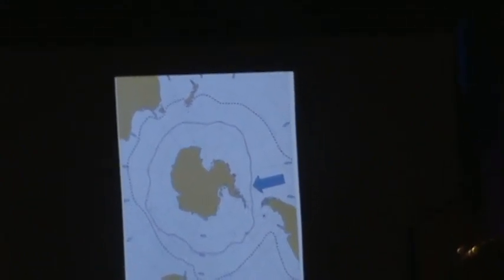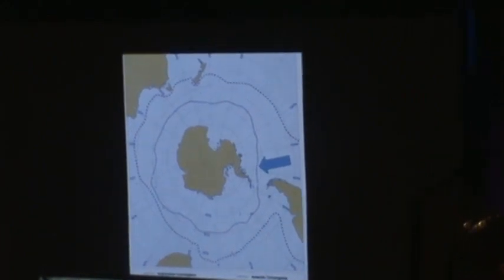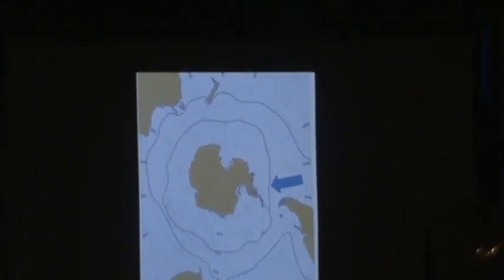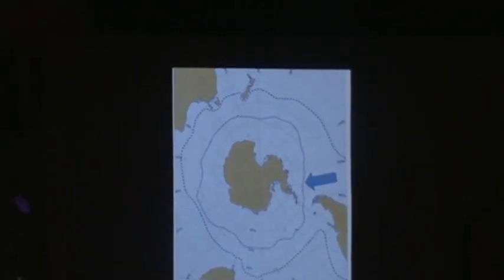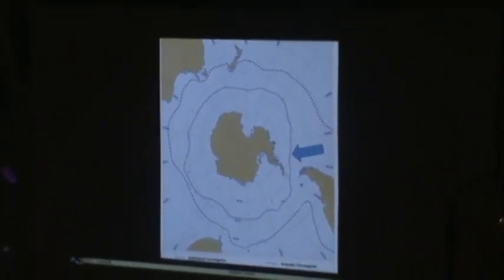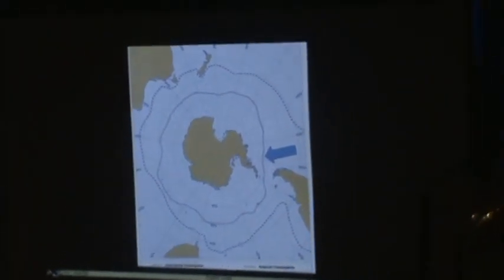That first one, the southerly one, is known as the Antarctic Convergence or the Polar Front. And this is an oceanographic boundary, a place where the relatively colder water south of that line bumps into, but doesn't really mingle with, the warmer water to the north.